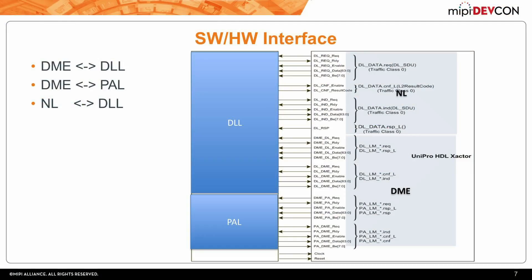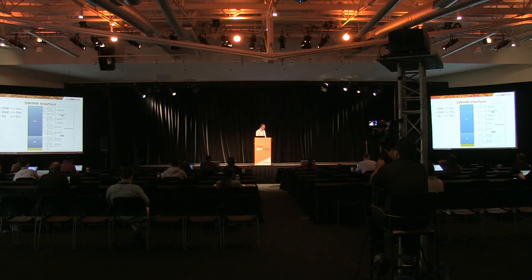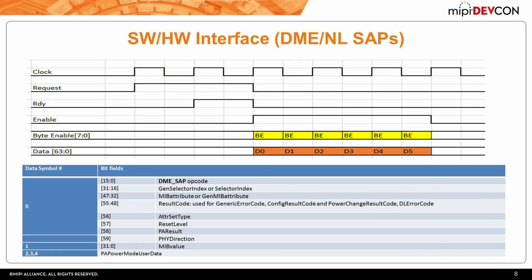The interface between the software layers and the hardware layers — represented by the data link layer and the physical adapter layer — is through a memory-like interface. The initiator of the request, being the transactor of the physical adapter layer or the data link layer, starts communication by asserting a request. When the target layer is ready, it asserts a ready signal, followed by an enable signal from the initiator with the data. The same interface is utilized between the data link and network layer, between the file adapter and the DME, and between the data link and the DME.